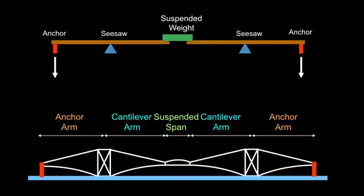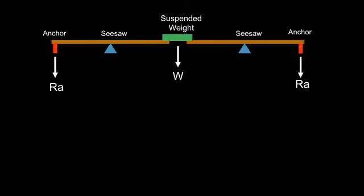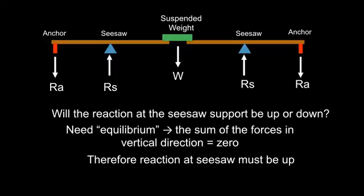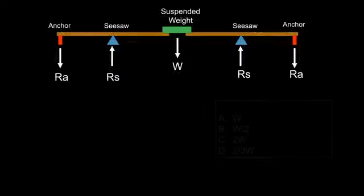We can think of this Firth of Forth bridge as essentially two seesaws with a suspended weight between them. Let's define the reaction at the anchor, that downward reaction, as Ra. And let's define the suspended weight's downward reaction as W. So will the reaction at the seesaw support be up, or will it be down?